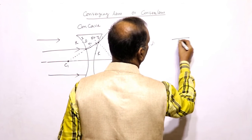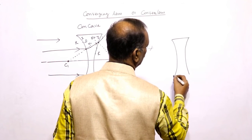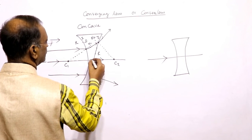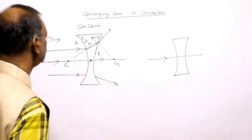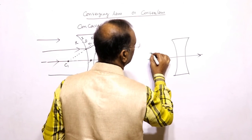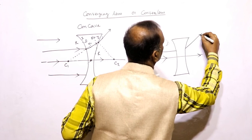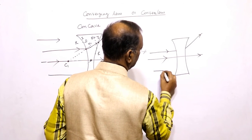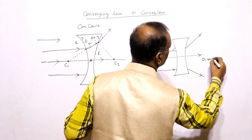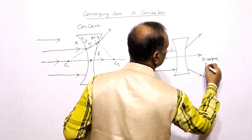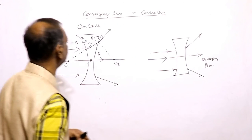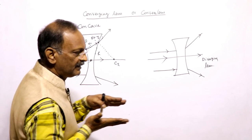For a concave lens, when parallel rays are incident on the lens, a ray passing through the optical center goes undeviated. Any rays parallel to this one, after refraction through the lens, diverge outward. That is why the concave lens is called a diverging lens — because the parallel rays are actually diverged. In the case of a convex lens, by contrast, the parallel rays are converged.